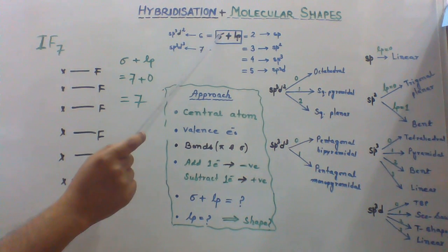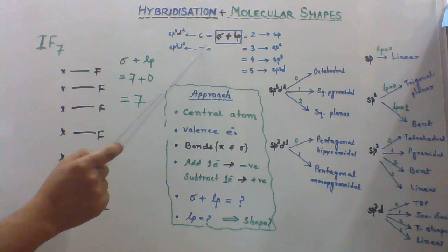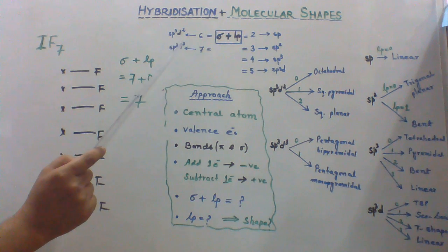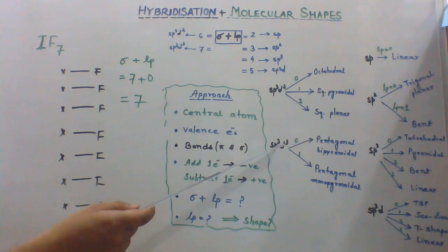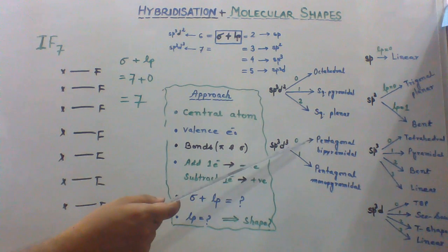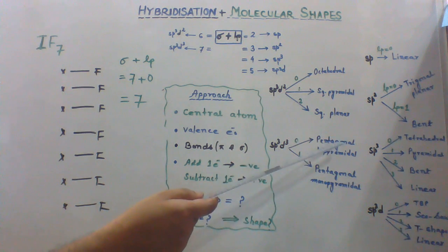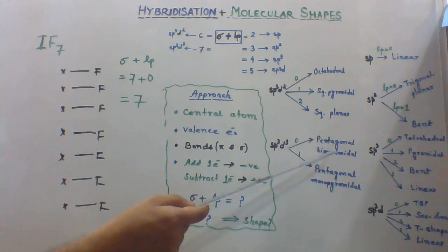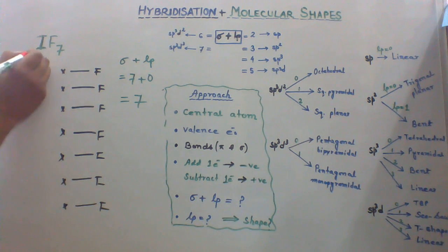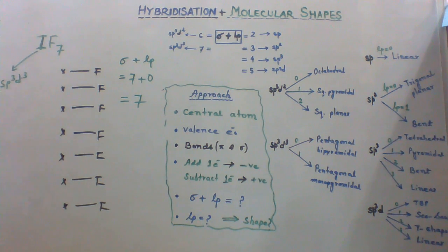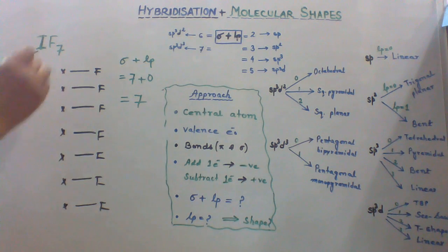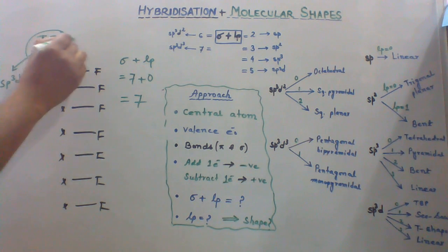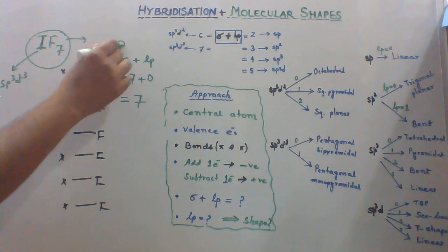Summation of sigma and lone pair giving 7 means it is sp3d3 hybridization. And sp3d3 hybridization with 0 lone pair corresponds to pentagonal bipyramidal. So iodine has hybridization sp3d3 because it has 7 summation and the molecular shape is pentagonal bipyramidal.